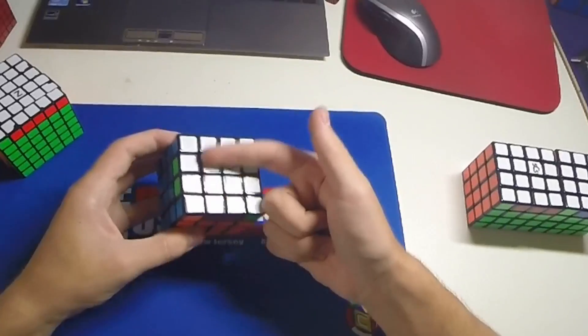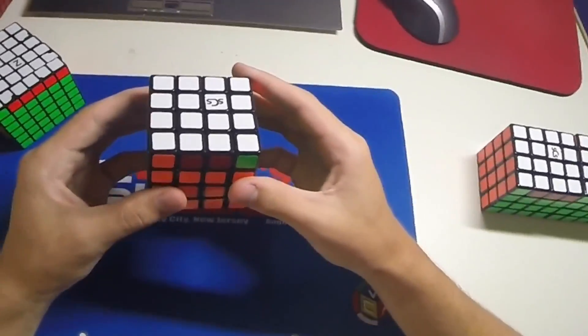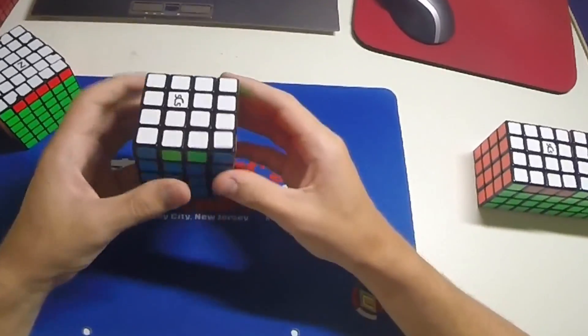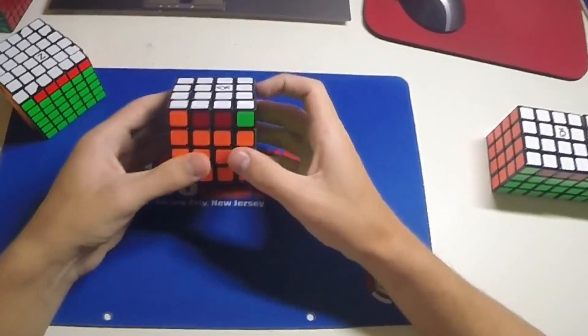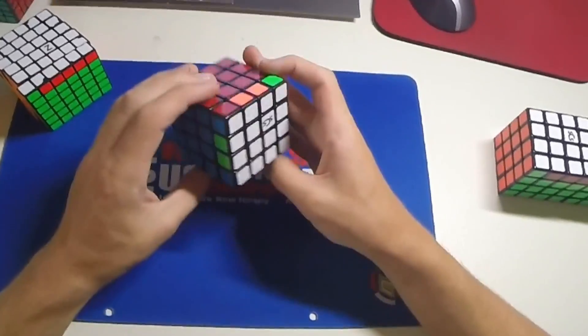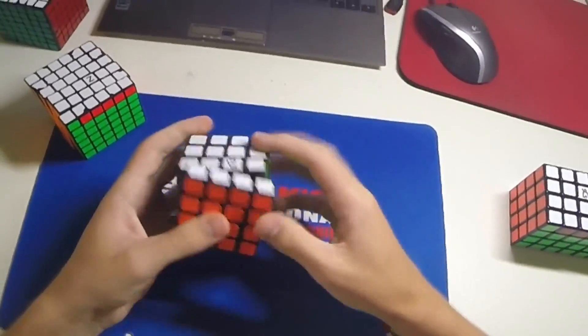So we know that the parity algorithm swaps these two edges, so if we do it from this angle, we will get a T permutation. If we do it from this angle, obviously F permutation sucks, so we want to do it from this angle and then do a T permutation.